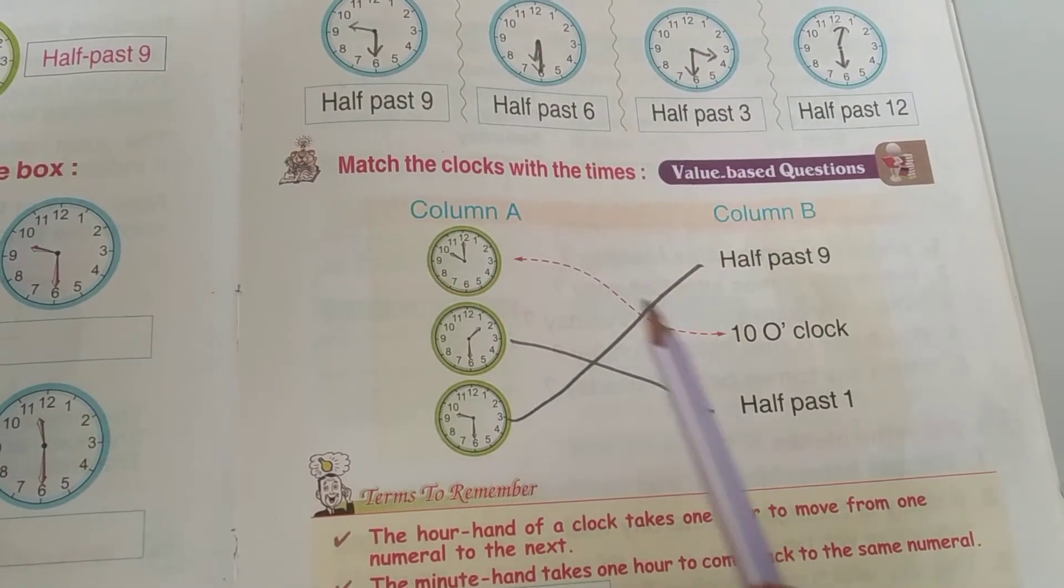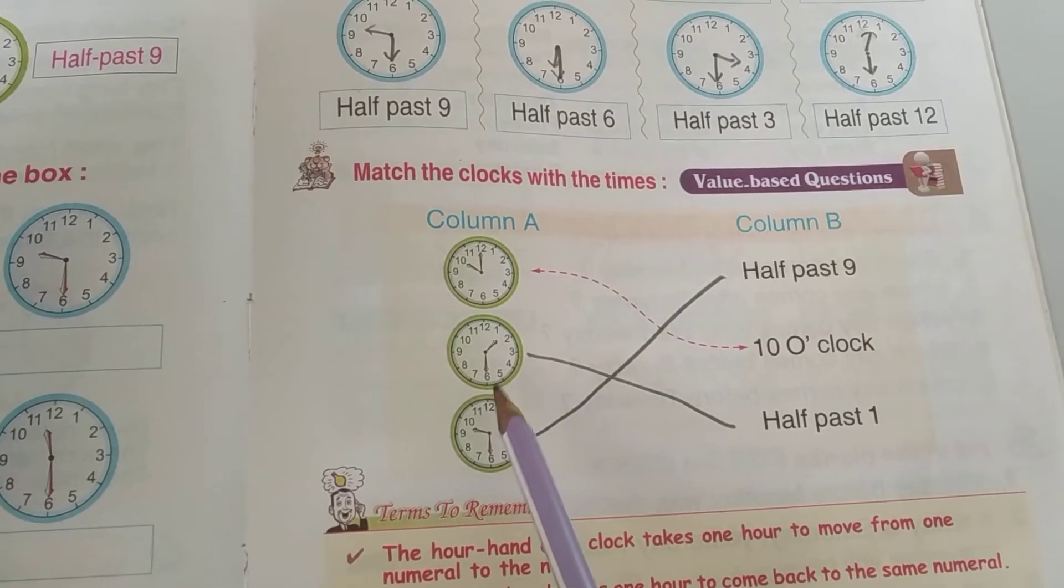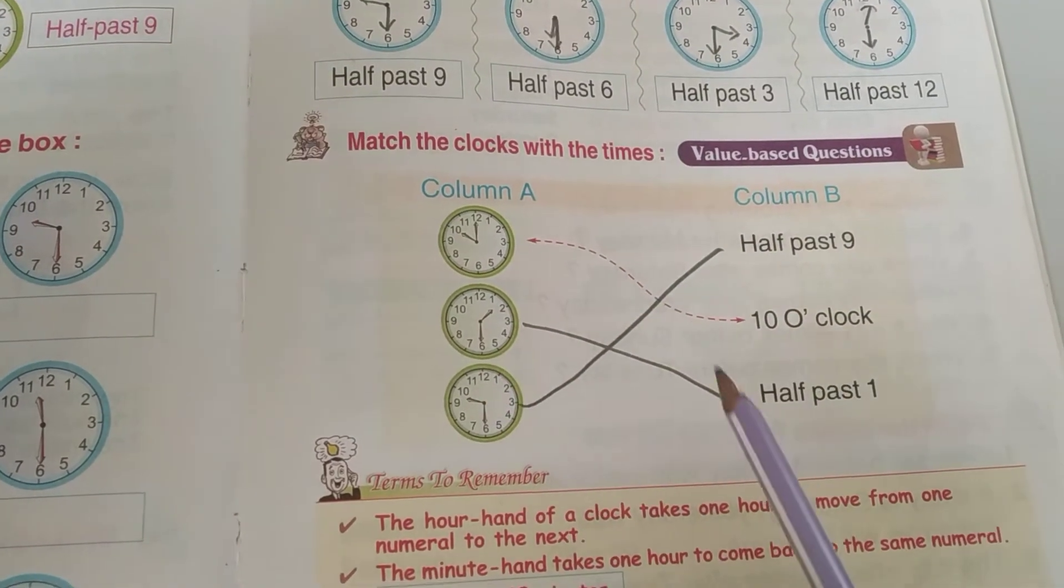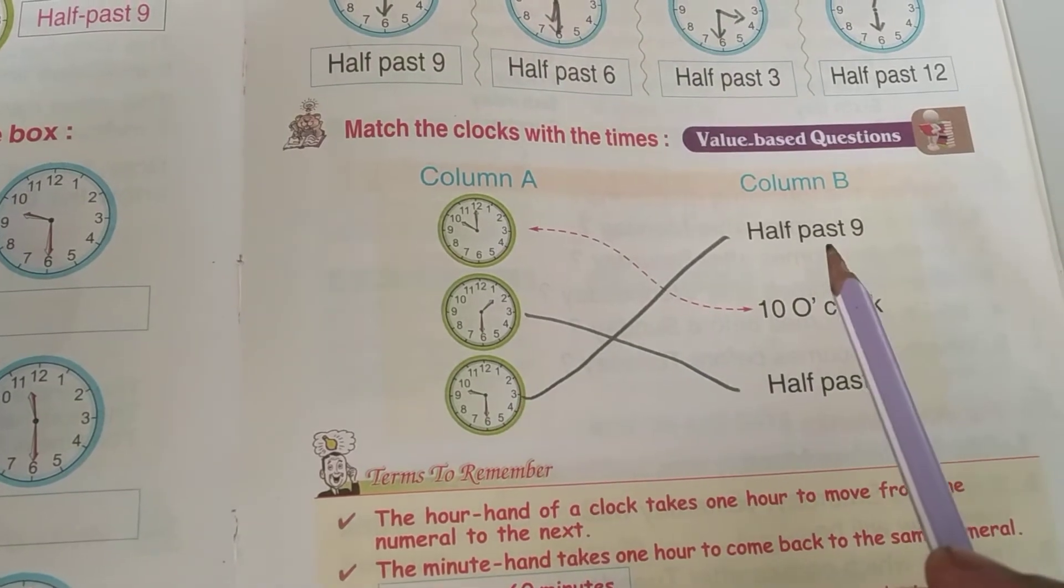10 o'clock, simple solution. What is this? Minute hand on 6 means what? Half past. Half past 1 or 2? Half past 1. Next, 9 or 10? Half past 9.